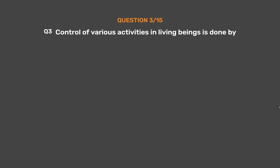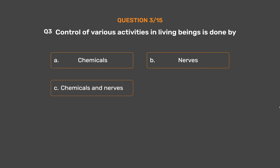Question No. 3. Control of various activities in living beings is done by: Option A - Chemicals. Option B - Nerves. Option C - Chemicals and Nerves. Option D - None of these.